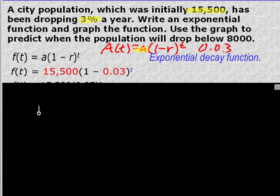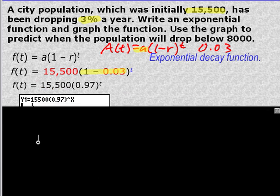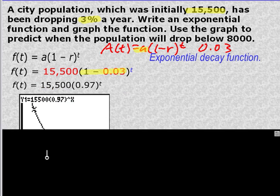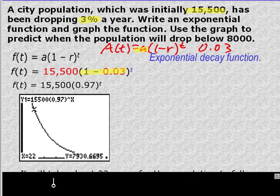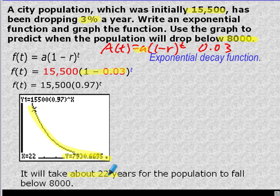And then combine these two terms. And that's going to give you this as your function that you're going to put into your graphing calculator. Graph it. And then do a trace to figure out when y is going to be 8,000 or less. And here they have their graph. They show it at 79.30, which is 22 years. So it's about 22 years until the population drops below 8% if the rate stays 3% each year.